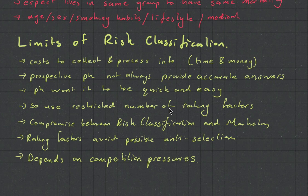So, there is just going to be a restricted number of rating factors and you have to make this compromise between your risk classification and your marketing. Because the less questions you ask in your form, the easier you can sell it. It's better for the broker. But you do want enough rating factors to avoid possible anti-selection or adverse selection. Anti-selection is just another word for it.